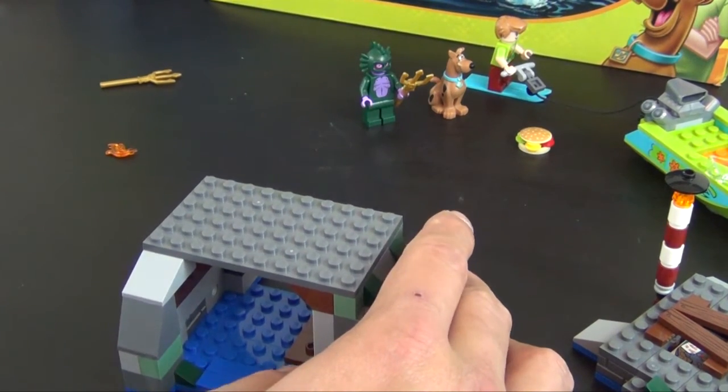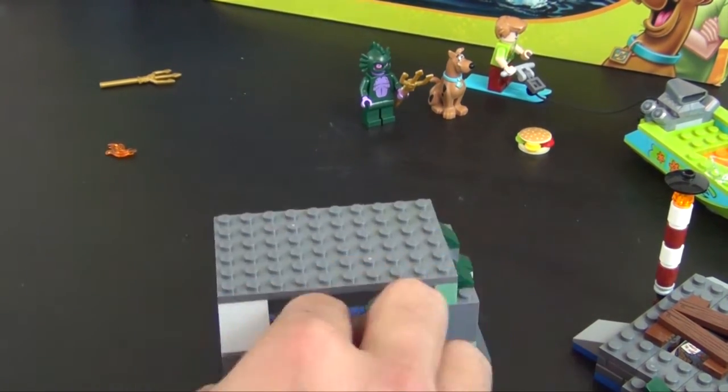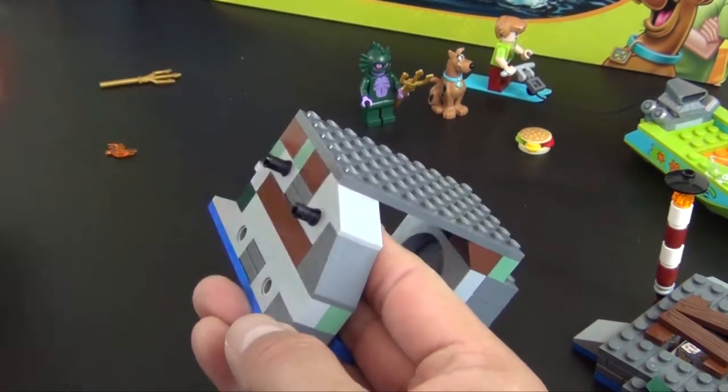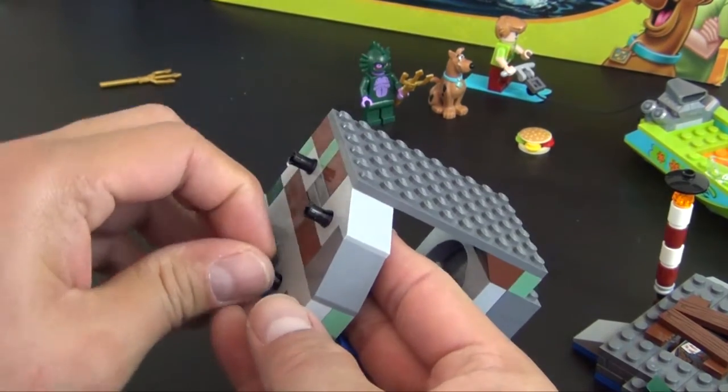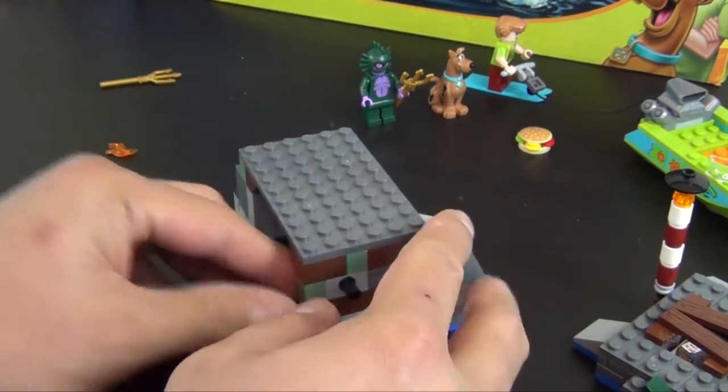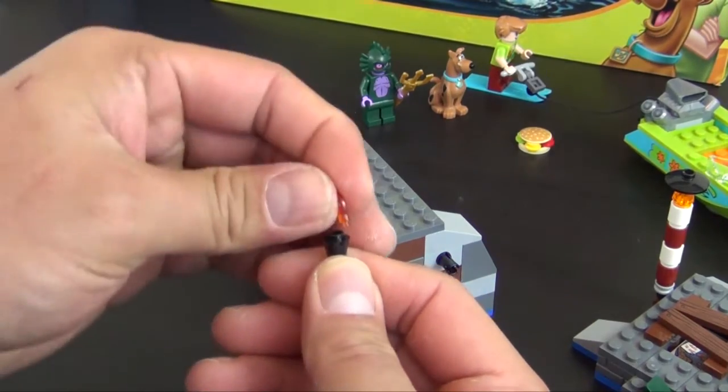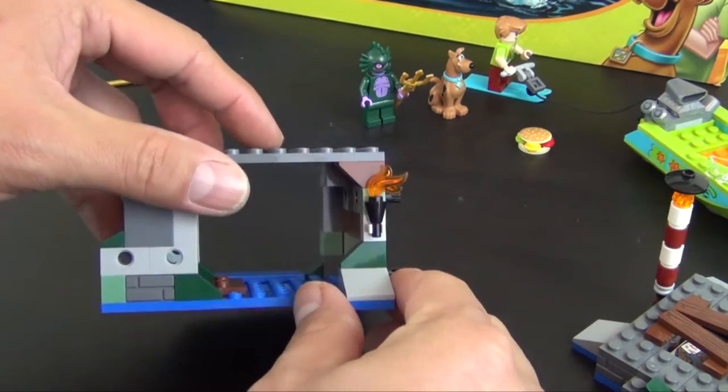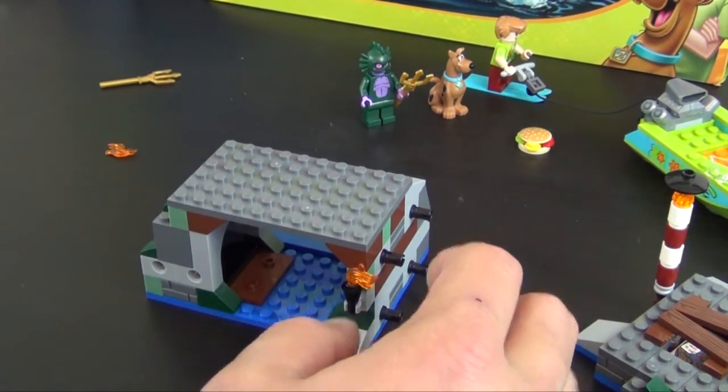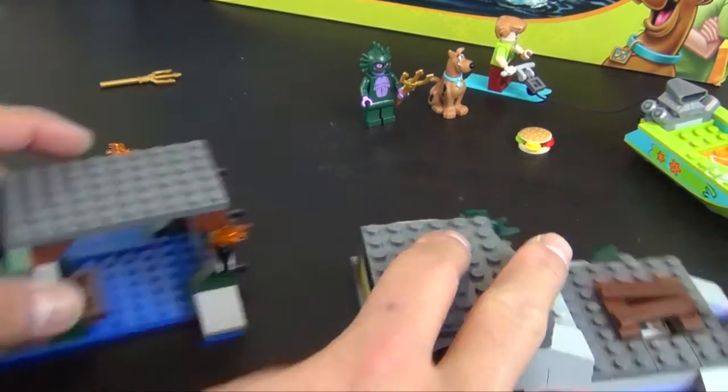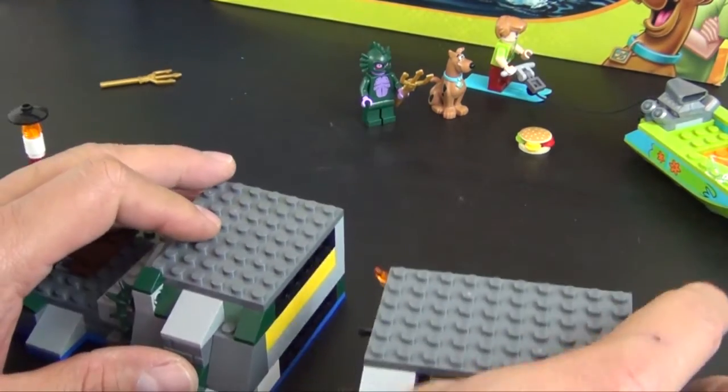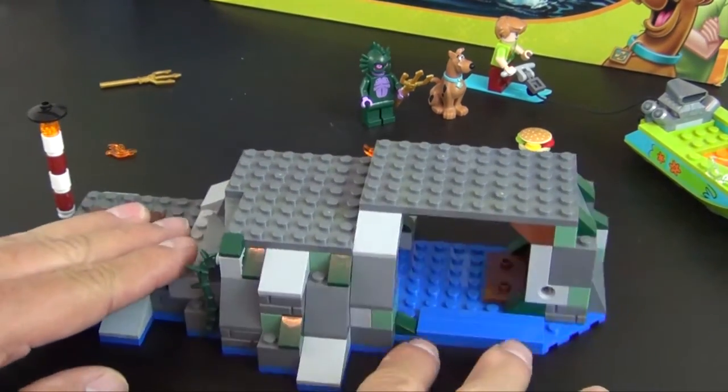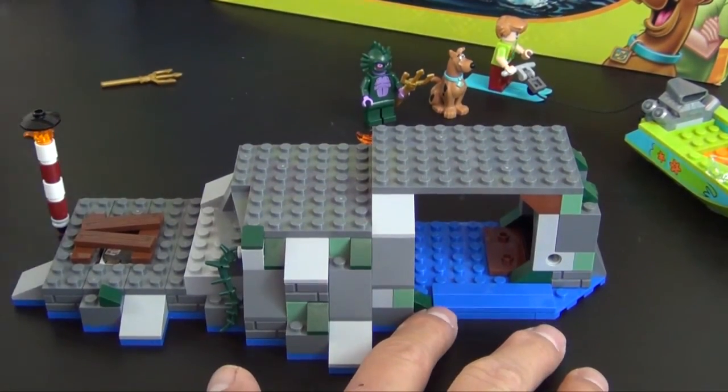That big element goes there. Let's see, we'll turn it to the side and we're going to attach four friction pins in here. We have this little ice cream cone piece with a flame that will attach to the side there. We bring our first element over that we made and the pins should all line up and they do. There you go. That's the foundation for the lighthouse.